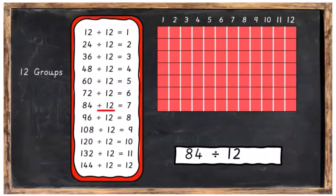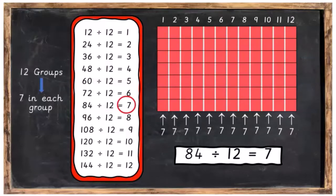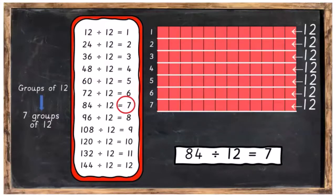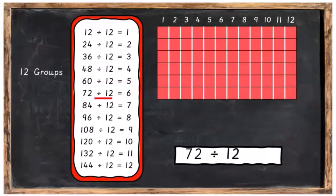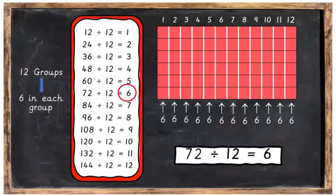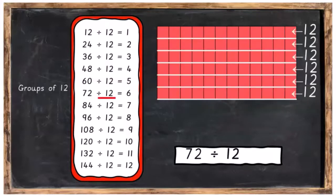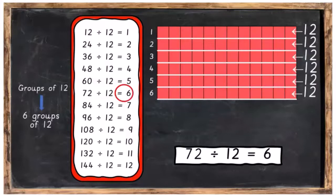84 divided up into 12 groups, you're going to have 7 in each group. Or 84 divided into groups of 12, you'll have 7 groups of 12. Then 72 divided into 12 groups — there are 12 groups there, you can see them with the white lines — and you're going to have 6 in each of those groups. The other way of saying it is 72 divided into groups of 12, and you're going to have 6 groups of 12.